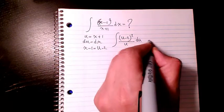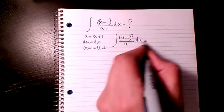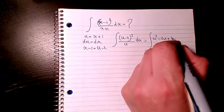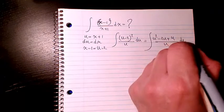I have it like that. Then I expand it. It's gonna be u² minus 2u plus 4 divided by u du.